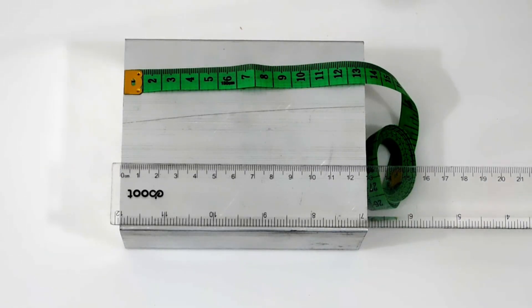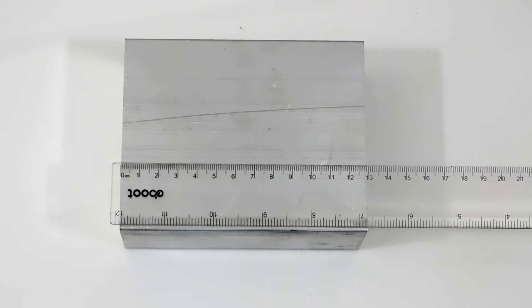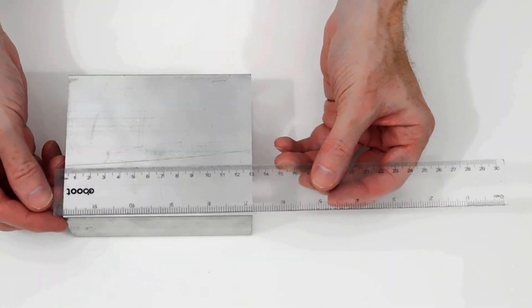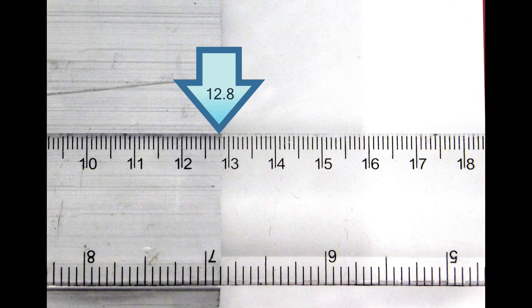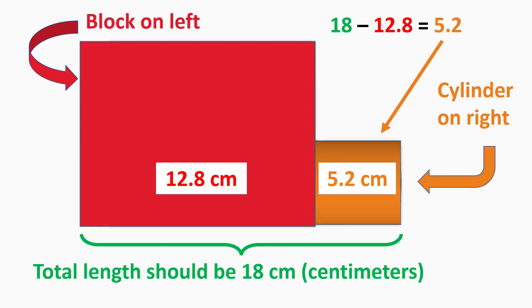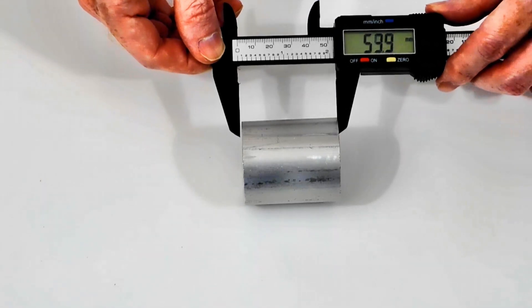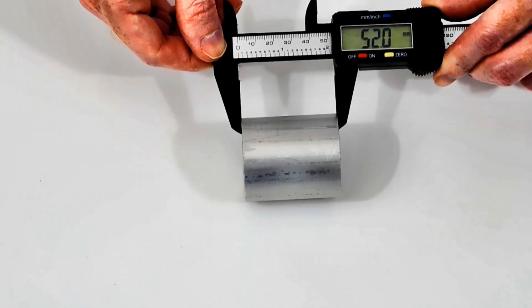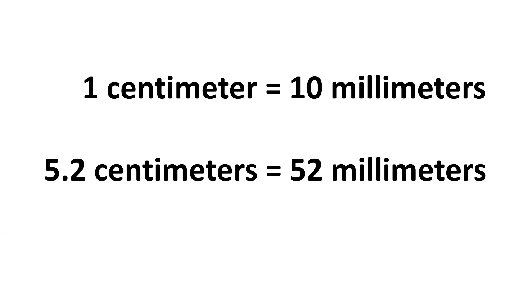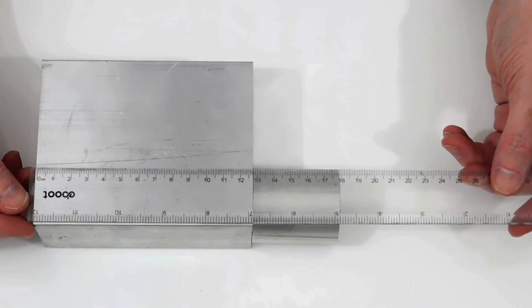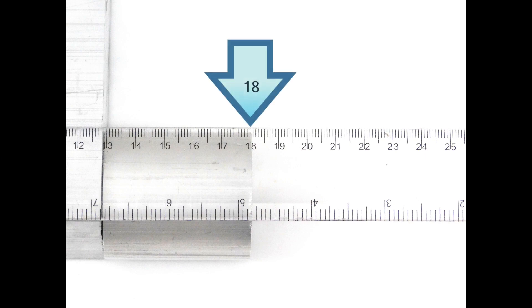Although measuring tapes are handy for some things, when we need to be precise, we use a metric ruler. We read a metric ruler just like we read a number line with decimals. We find that the block is 12.8 centimeters. We can calculate the length that the cylinder needs to be by subtracting 12.8 from 18, and we get 5.2 centimeters. After the cylinder arrives, we can check its length using a caliper, because the cylinder is short and will fit. The caliper shows us the length in millimeters. To go from centimeters to millimeters, we multiply by 10. So 5.2 centimeters is the same as 52 millimeters. It looks like this block is the right size. We confirm that the full length is 18 centimeters.